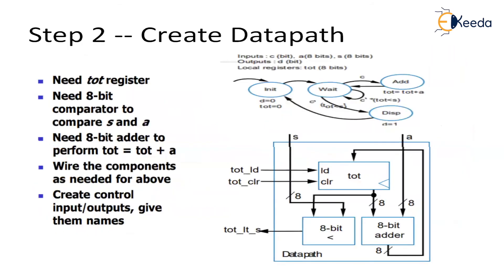The next step is to create a data path. Looking at what operations are performed in the high-level state machine: an addition operation is performed — the value of cash is added inside the total register. So I need an 8-bit adder for performing addition. Inside the data path I also need to compare whether the value of soda and the value of cash are the same or less, so I need a comparator. And I need to store the cash data inside a register called total — so I have a total register.